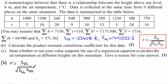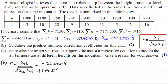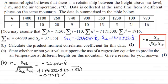Substituting our values in: for STH we've got minus 22408.8 recurring. This is all divided by the square root of SHH, which is 1491222.2 recurring, multiplied by STT, which we were given as 371.56. If you work this out, you end up with negative 0.9519 and so on. Rounding to three significant figures, this gives minus 0.952 to 3SF.